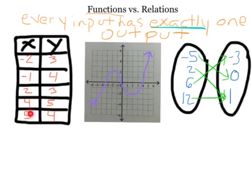None of them have more than one y value that goes with them. Negative 2 is only paired with 3, negative 1 is only paired with 4, 2 is only paired with 3, 4 is only paired with 5, and 5 is only paired with 4. It is okay that there are two y values that are the same, because those are the outputs. It's alright that both negative 2 and positive 2 are paired with 3, and that both negative 1 and 5 are paired with 4, because each input does not have more than one output.